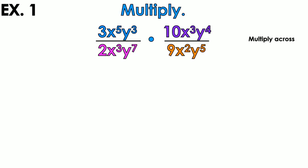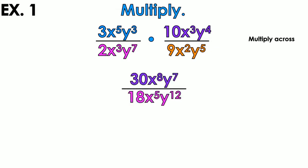When dealing with monomials, I go ahead and multiply across. So I get 3 times 10, which is 30. I get x to the 5th times x cubed, which is x to the 8th. y cubed times y to the 4th is y to the 7th. On the bottom, 2 times 9 is 18, x cubed times x squared is x to the 5th, and y to the 7th times y to the 5th is y to the 12th.